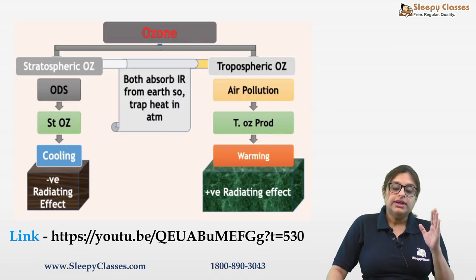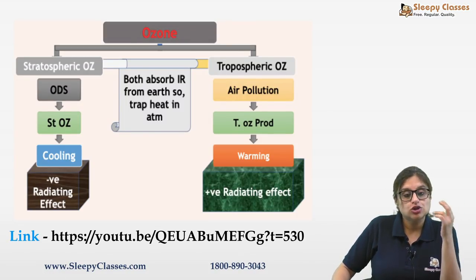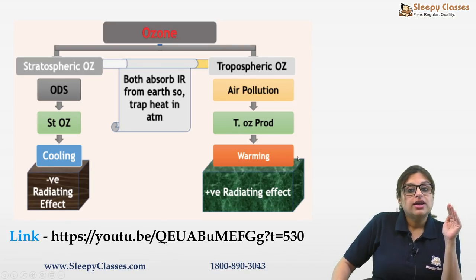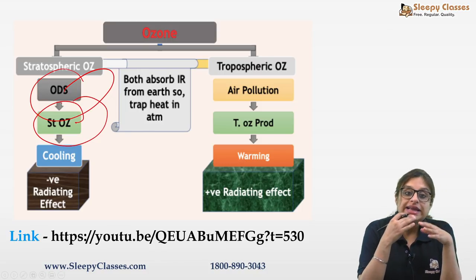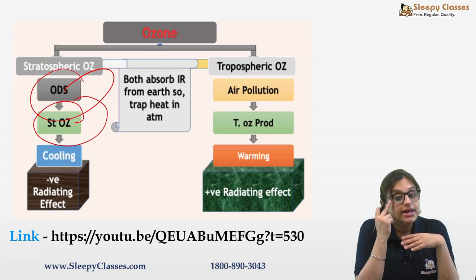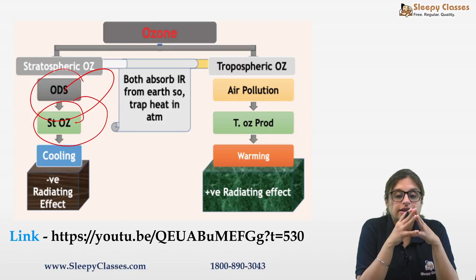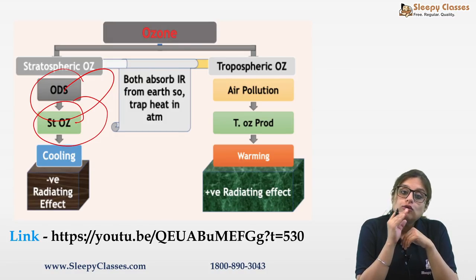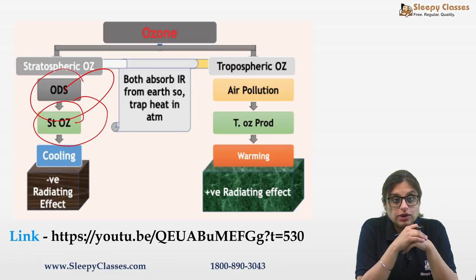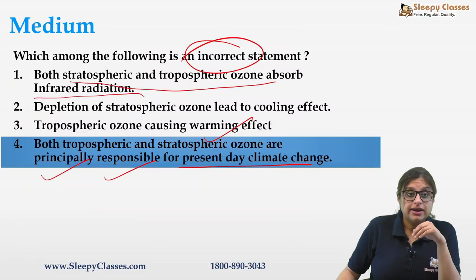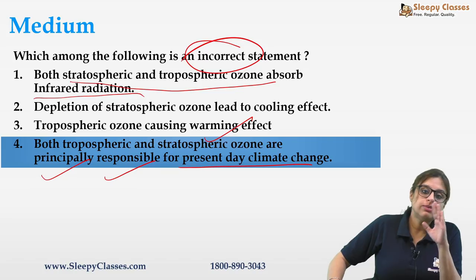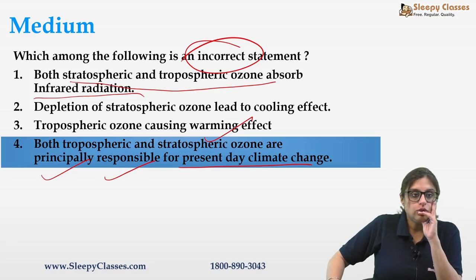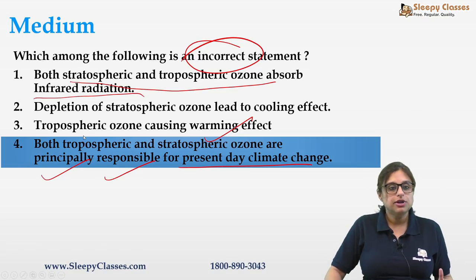Both stratospheric and tropospheric ozone absorb IR radiation. Stratospheric ozone is being depleted by ozone-depleting substances, so it absorbs less IR radiation, leading to a cooling effect. Tropospheric ozone is increasing in the troposphere due to pollution (photochemical smog). As tropospheric ozone increases, it absorbs more IR radiation, causing a warming effect — giving a positive radiative effect. So ozone depleting substances cause cooling via stratospheric depletion, while tropospheric ozone causes warming.